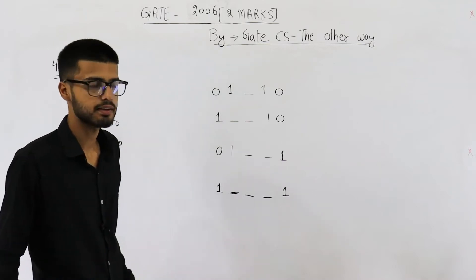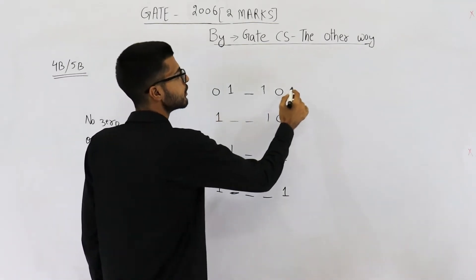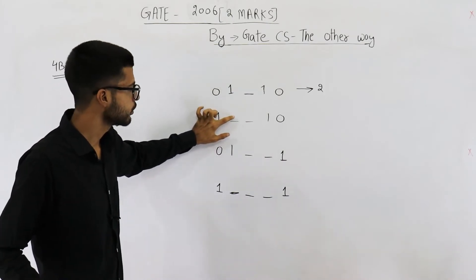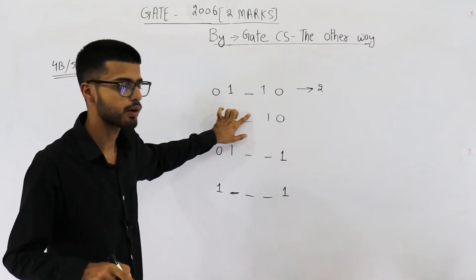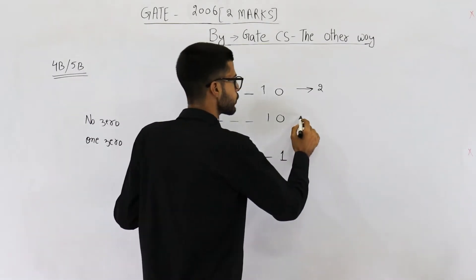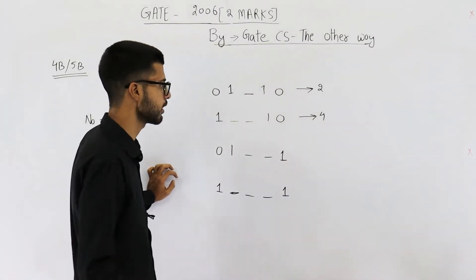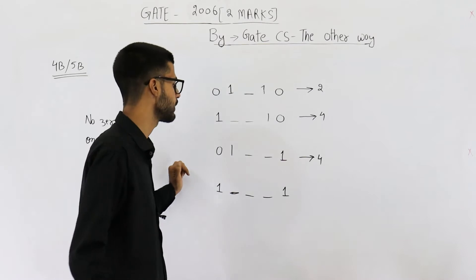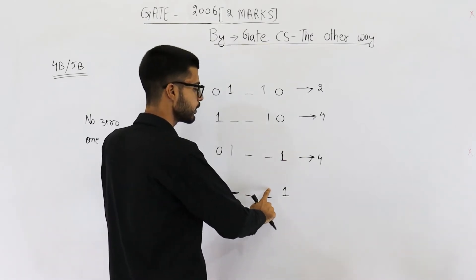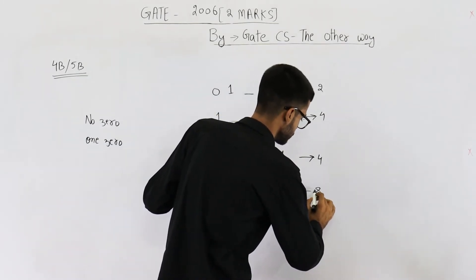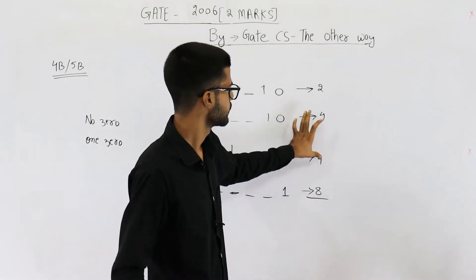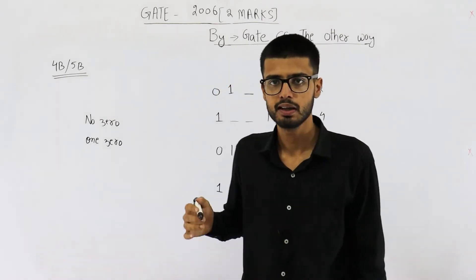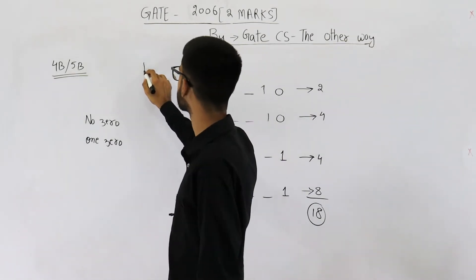So how many total combinations are there? In the first case, one free bit gives 2 patterns. In the second and third cases, two free bits each give 2²=4 patterns. In the last case, three free bits give 2³=8 patterns. So total is 2+4+4+8=18. Total eighteen codewords are possible. The answer to this question is 18.